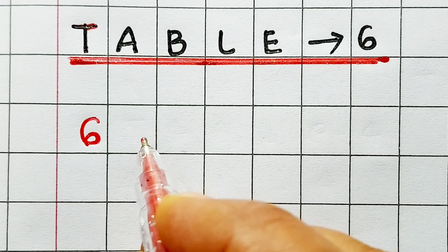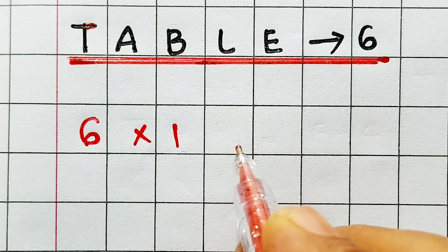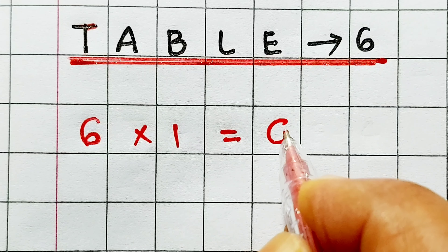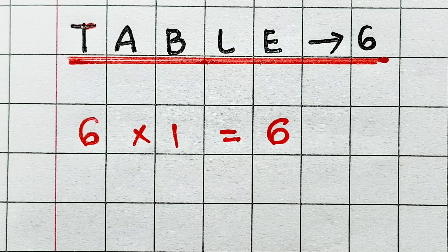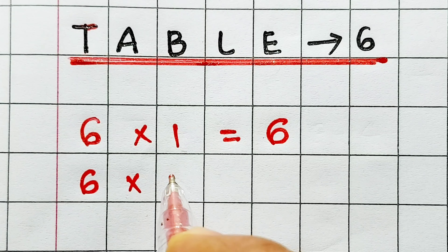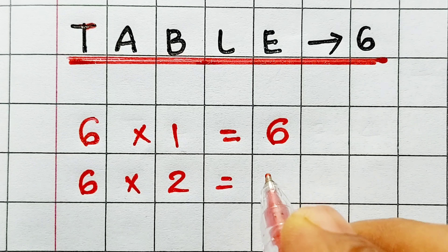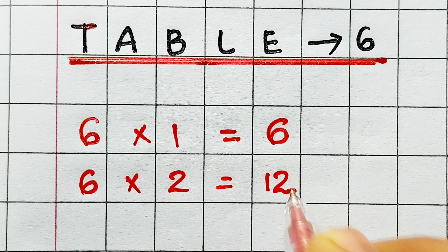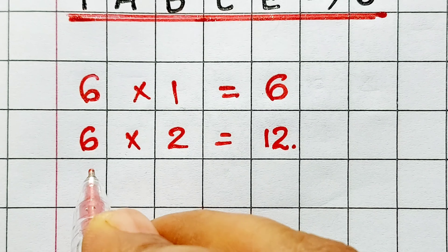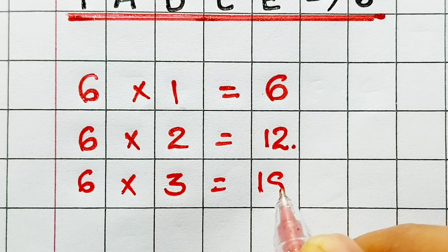Six ones are six. Six two's are twelve. Six three's are eighteen.